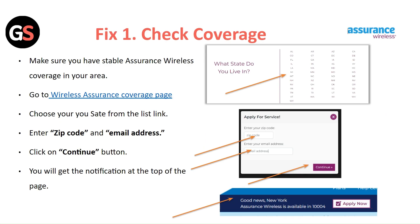Fix 1: Check Coverage. Make sure you have stable Assurance Wireless coverage in your area. Go to the Assurance Wireless coverage page, choose your state from the next link, enter the zip code and email address. Click on the Continue button and you will get a notification at the top of the page.